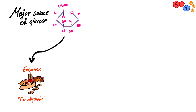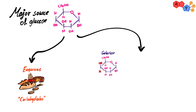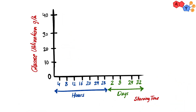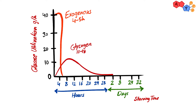The major source of glucose is exogenous glucose — that is, glucose obtained from the food we eat, namely carbohydrates. Dietary galactose and fructose can be converted to glucose in the liver. This exogenous supply is rapidly used up by the body, lasting around four to five hours on average. During fasting, glucose supply is provided by the breakdown of glycogen in the liver, which can last somewhere between 10 to 18 hours.